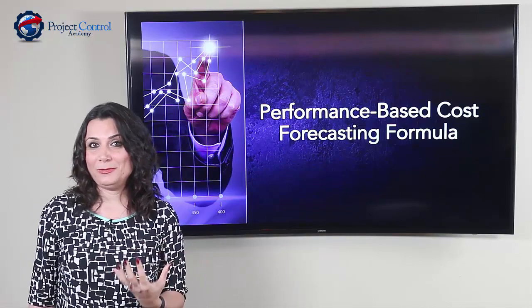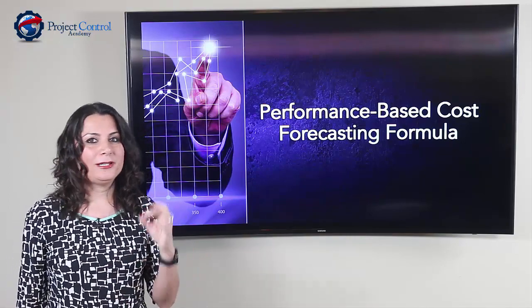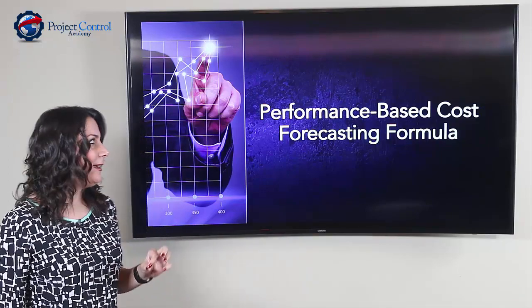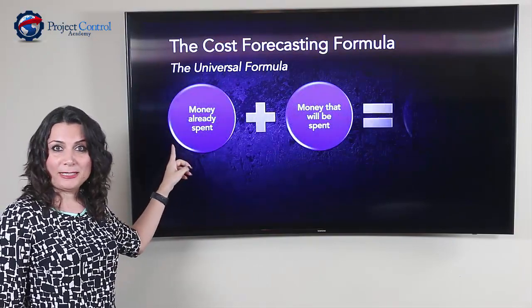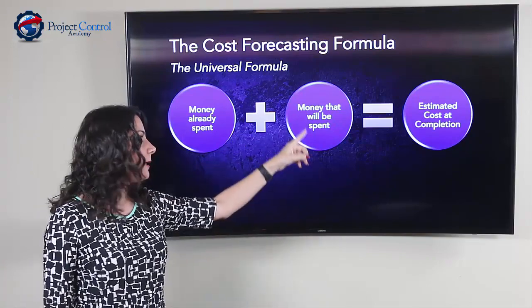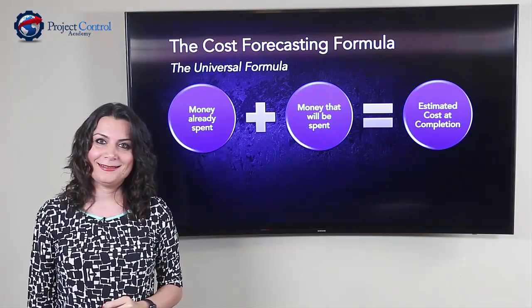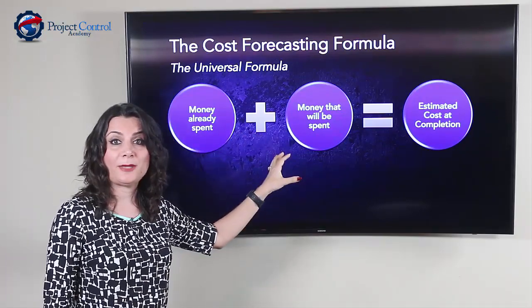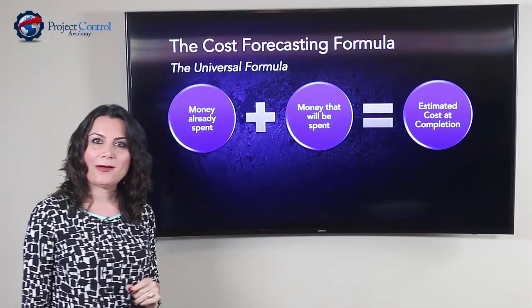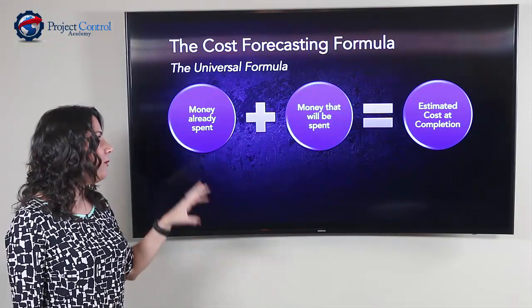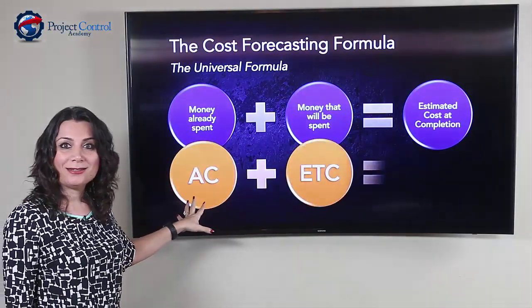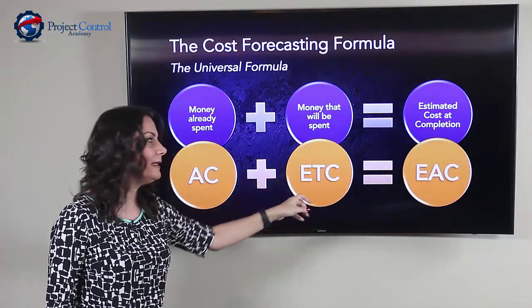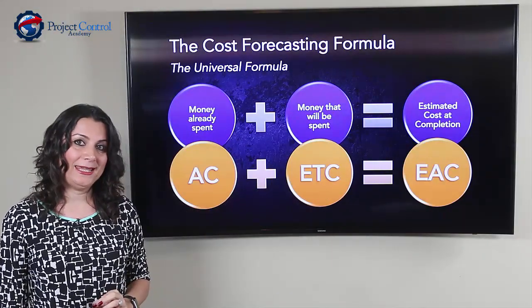There is a universal formula for Estimate at Completion. It is simply: the money that has already been spent plus the money that will be spent equals the Estimated Cost at Completion. Translating that into Earned Value terms: Actual Cost (AC) plus Estimate to Complete (ETC) gives us our Estimate at Completion (EAC).